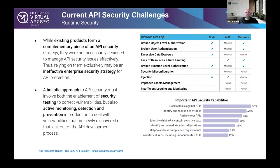To truly tackle this problem, go through the threat scenario exercise: identify your loss events, what could trigger them, and how vulnerabilities would be leveraged. Most importantly, for a holistic approach to API security, you must combine security testing before production to remove vulnerabilities, with active monitoring, detection, and prevention in production to handle any vulnerabilities that slip through — including those from third-party development.